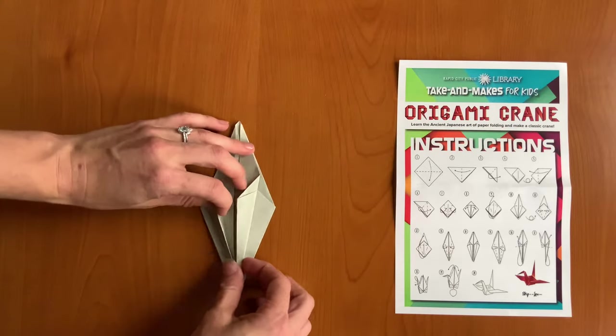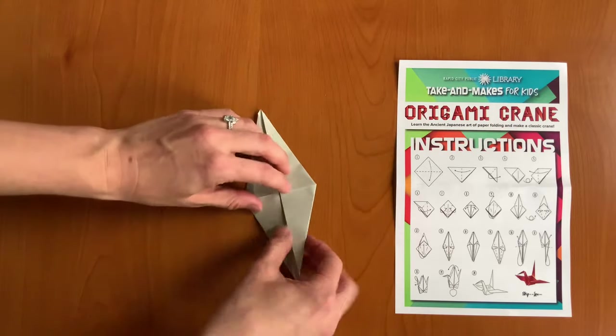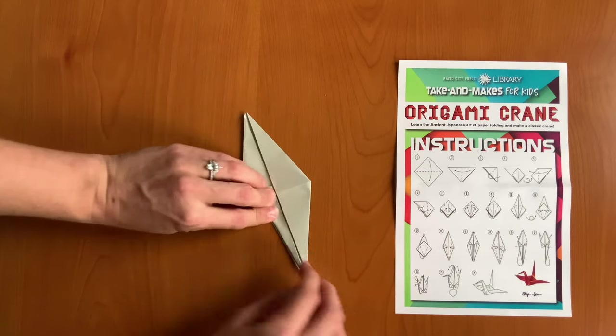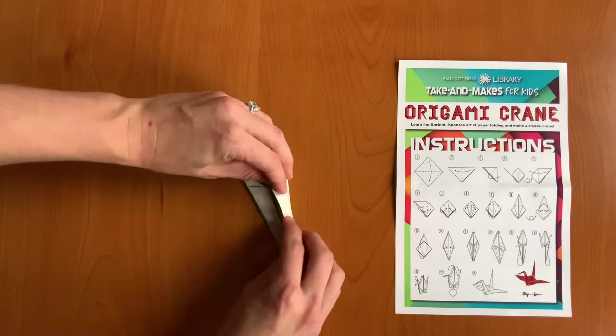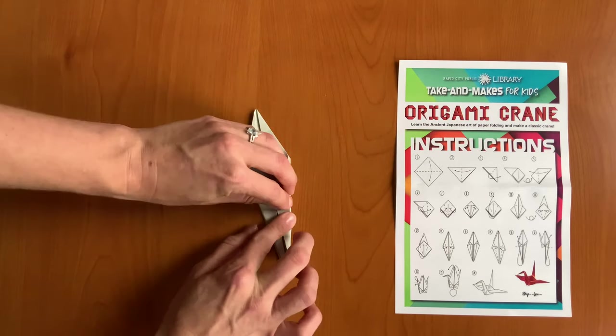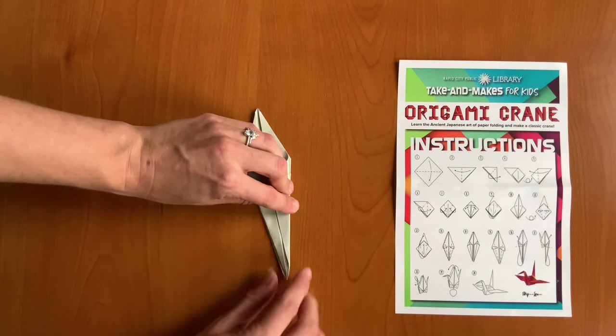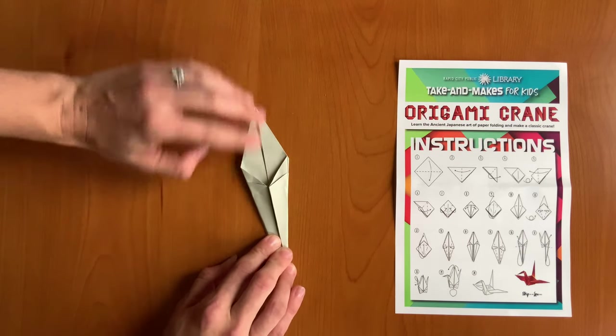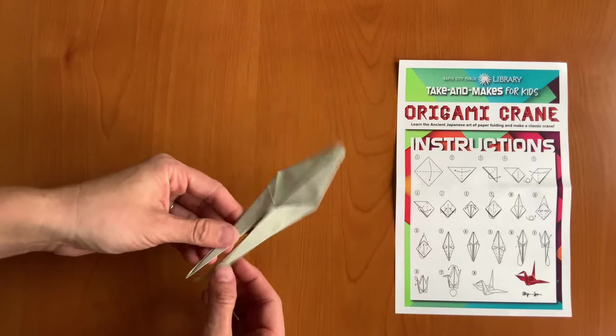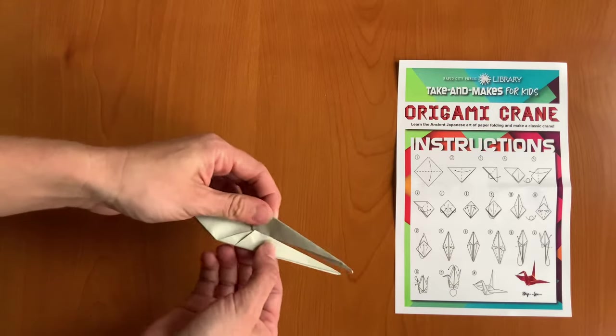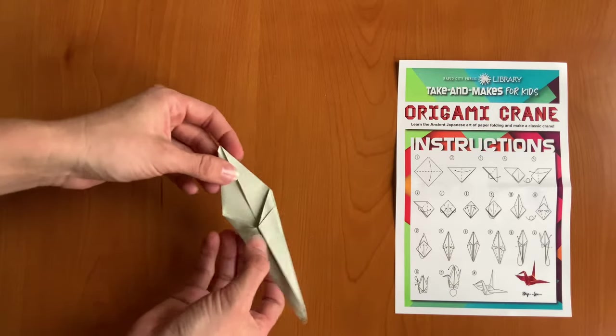Now we'll do the same thing on the opposite side. Great. Guys, we're so close to being done. So now we have kind of the same shape that we had before, but it's a little bit skinnier, and it has those two legs still.